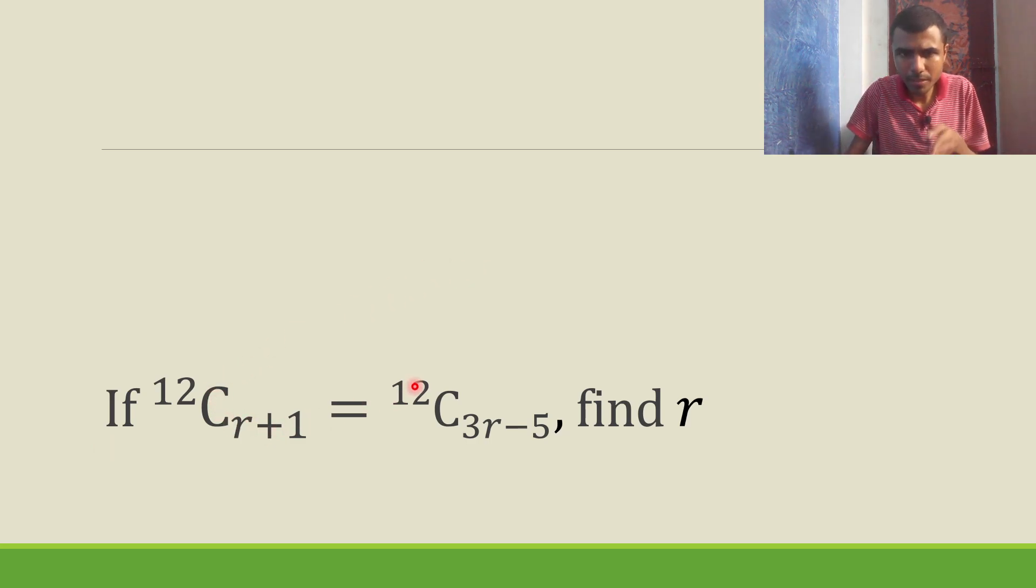Hello learners, if 12Cr+1 = 12C3r-5, then we have to find r.